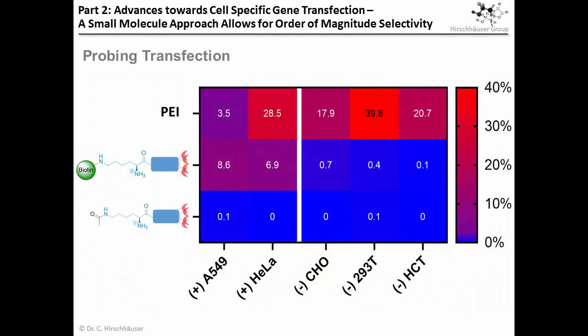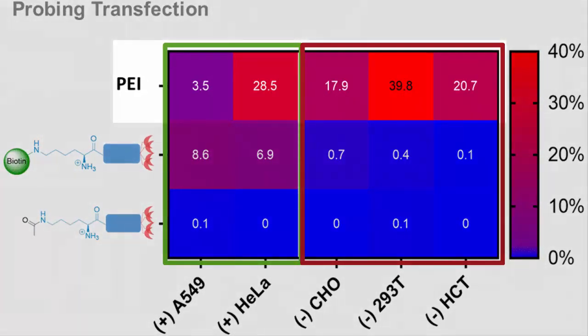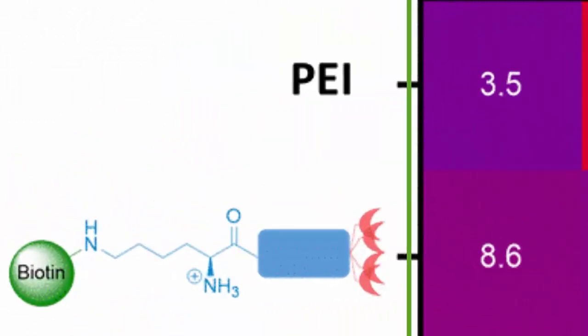This heatmap shows the result for 5 cell lines. The two columns on the left contain the data for biotin receptor-positive cell lines and the three on the right for biotin receptor-negative cell lines. It can be seen immediately that PEI is quite efficient in transfecting all cell lines. Our vector, on the other hand, displays a clear preference for biotin receptor-rich cell lines, which are transfected with a 10 times greater efficacy compared to cell lines with fewer biotin receptors at their cellular surface. We were particularly happy about the good transfection results for A549 cells, which overexpress biotin receptors and can indeed be a little bit stroppy when classical transfection vectors are used. Here, our vector was even better than PEI.